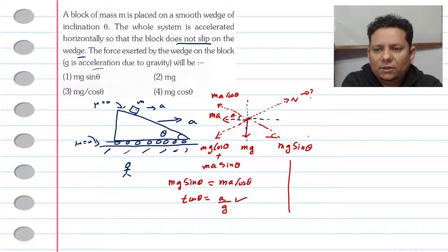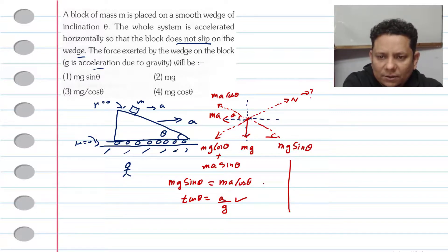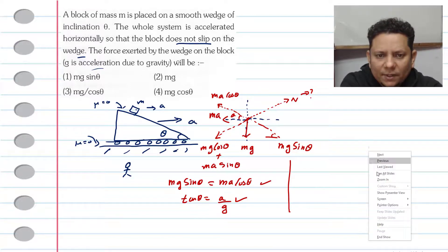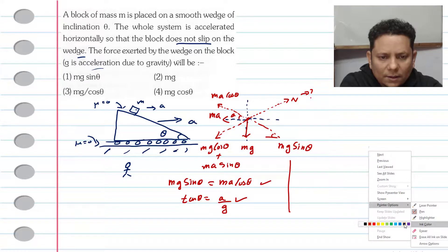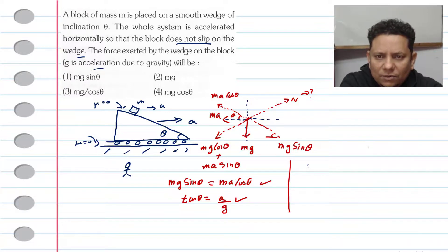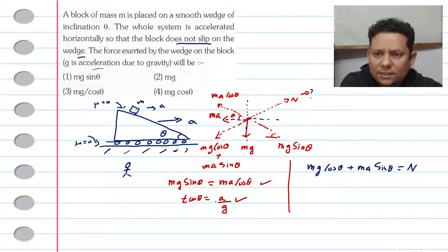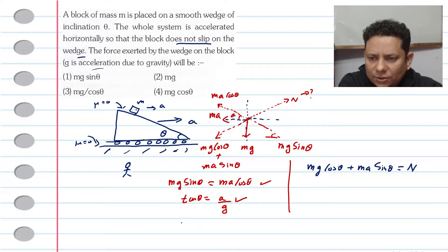Now we need to find the normal force value. Balancing forces perpendicular to the incline gives the second equation: N equals Mg cos theta plus MA sin theta. We already know that A equals g tan theta from our first condition.